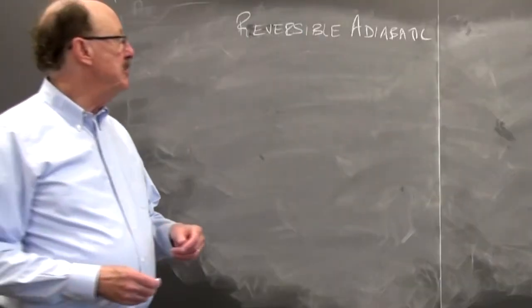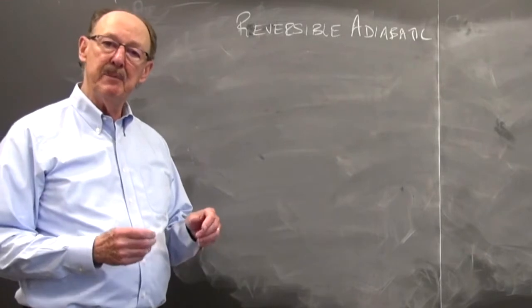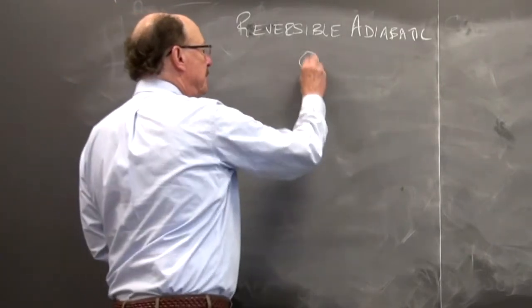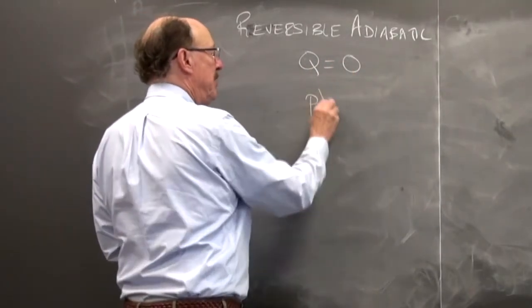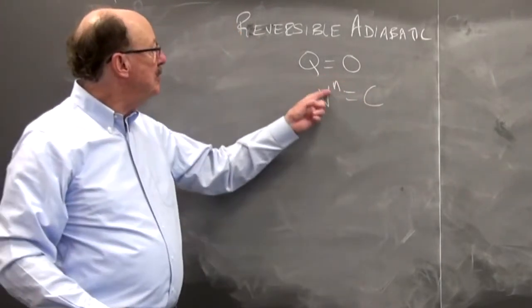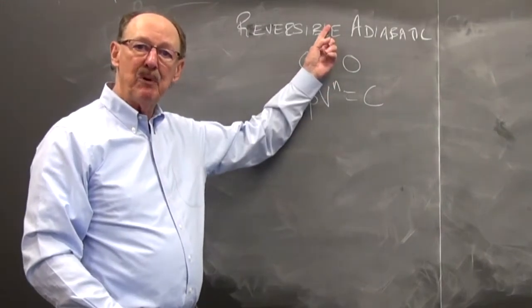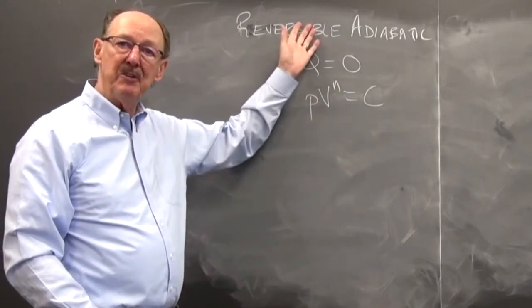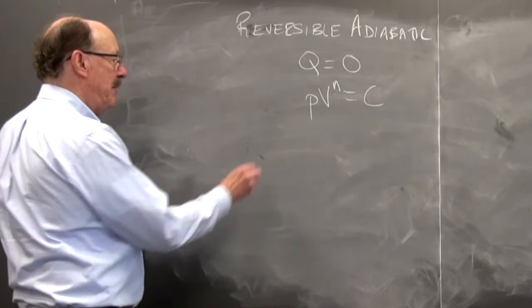Now we're going to introduce a special case of the polytropic process called the reversible adiabatic process. In this case Q is equal to 0 and we have a special case where PV to the N is equal to a constant. And what we're going to do is find out that N has a certain value for a reversible adiabatic process. In the text this is developed one way, I'll develop it here another way and the result is the same in both instances.